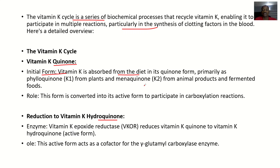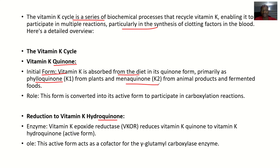Primarily, we have phylloquinone, that's Vitamin K1, which can be derived from plants. Then we have menaquinone, that's Vitamin K2, which can be derived from animal products and fermented foods.